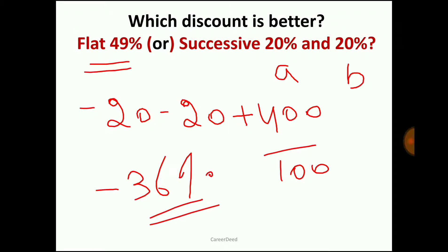So which discount is better? Obviously the flat discount is better, since flat gives 49% while successive gives only 36%. I hope you understand the difference between flat discount and successive discount. In upcoming videos, let us discuss some problems based on market price.